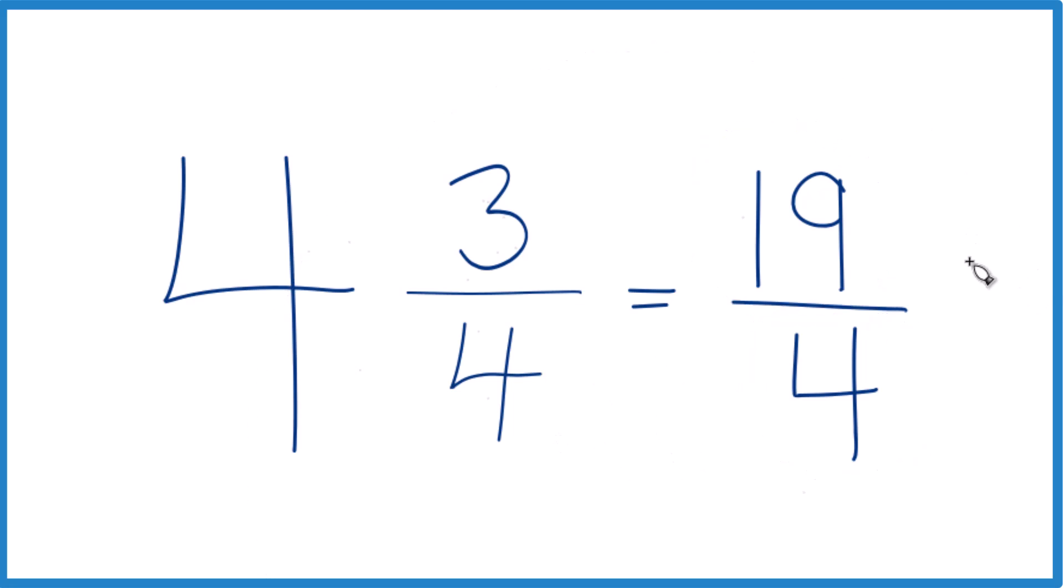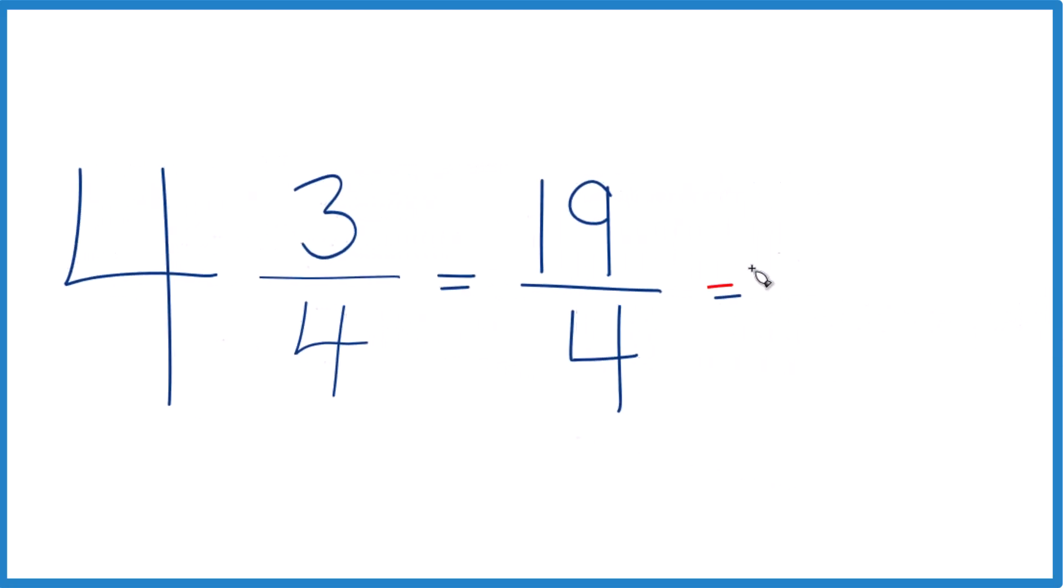And we can check our work, too. 4 goes into 19, 4 times 5 is 20, so how about 4 times 4, that would equal 16, with 3 left over. Bring the denominator across, we get 4 and 3 fourths.